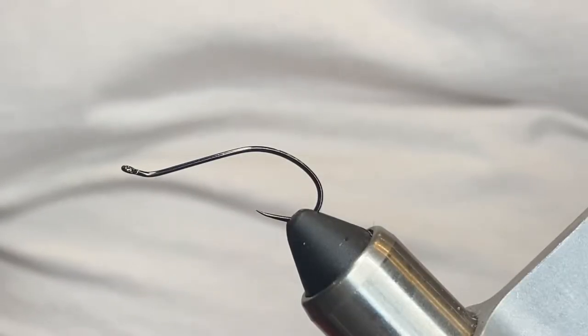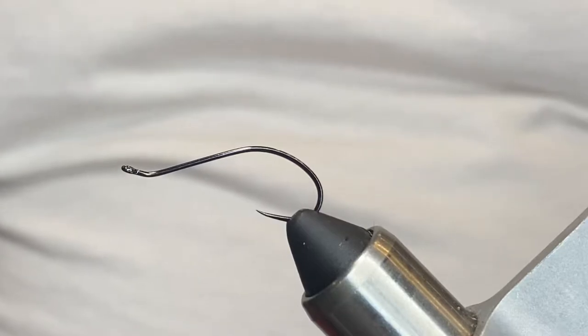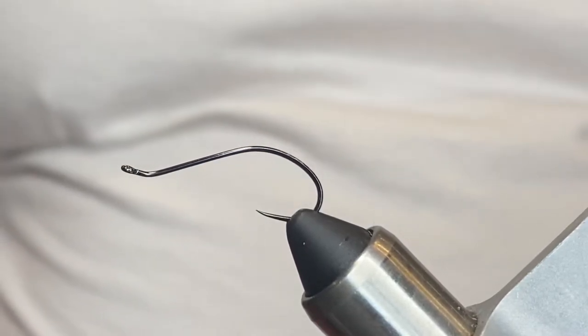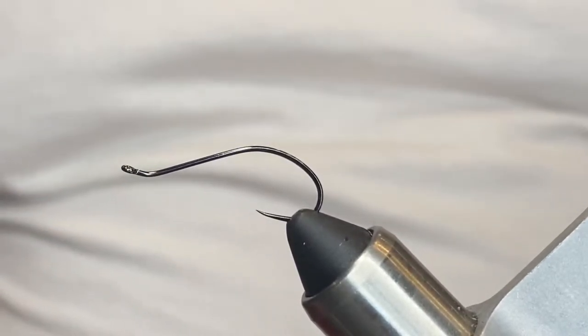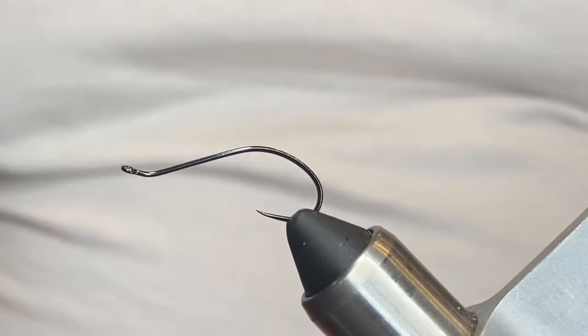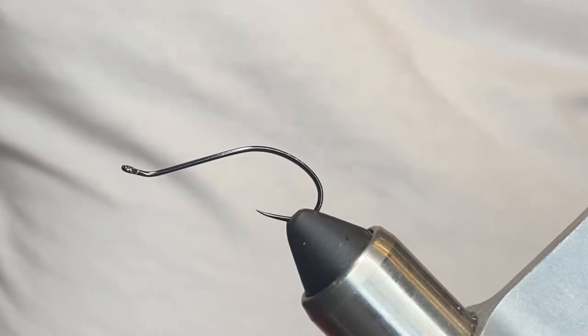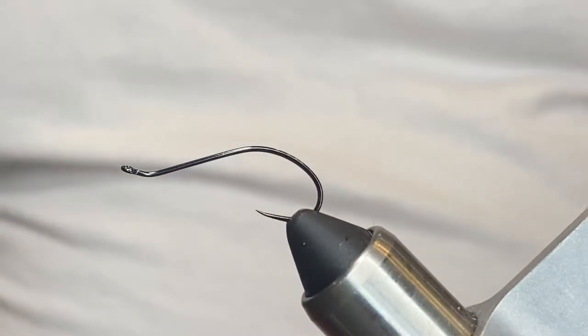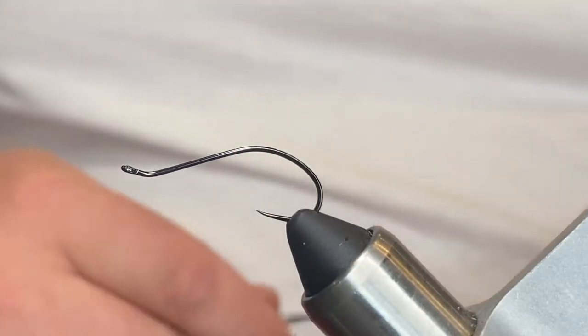All right y'all, welcome back. What we're going to tie today is another one of those easy to tie, proven patterns: Graham's Bloodworm. It's a very effective fly. I tie it in a variety of sizes. What's in the vise tonight is a size 8 worm hook. I tie this all the way down to an 18 3XL.